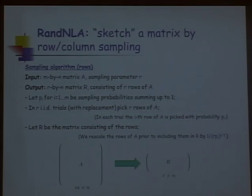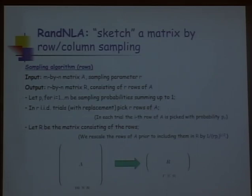To get unbiased estimators, whenever you sample a row, you also keep a rescaling factor: 1 over the square root of R times P_i, where R is the sampling parameter and P_i is the probability with which you sampled that row. This helps in the analysis to get unbiased estimators. The idea is to sketch your matrix simply by keeping a few of its rows, sampled randomly.